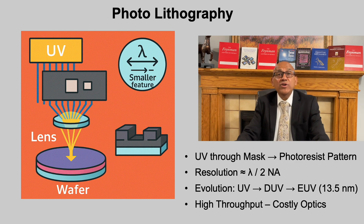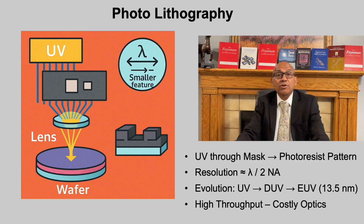Photolithography is the foundation of modern semiconductor manufacturing. A light source projects ultraviolet radiation through a patterned mask onto a photoresist-coated wafer. The transparent and opaque regions of the mask determine which parts of the resist are exposed. In positive resists, exposed regions dissolve away. In negative resists, exposed regions cross-link and remain.